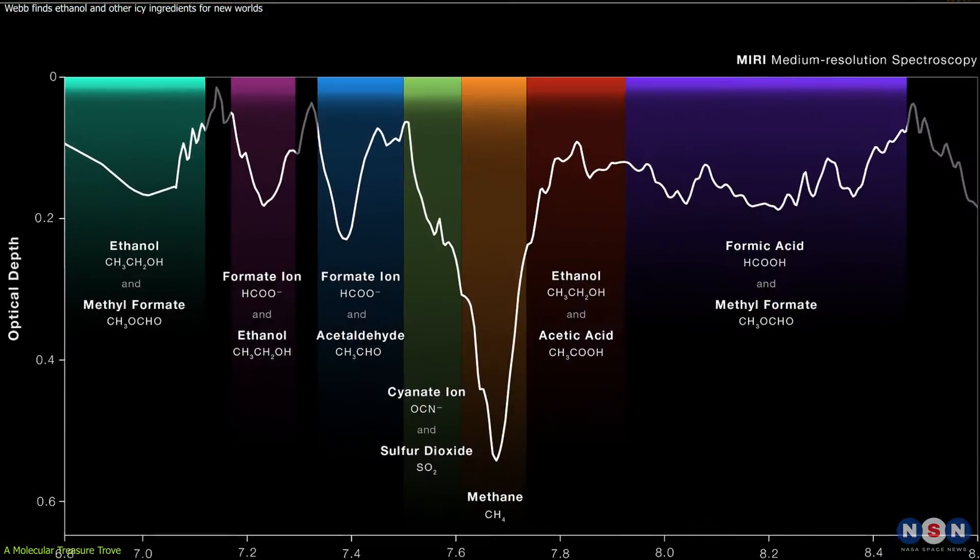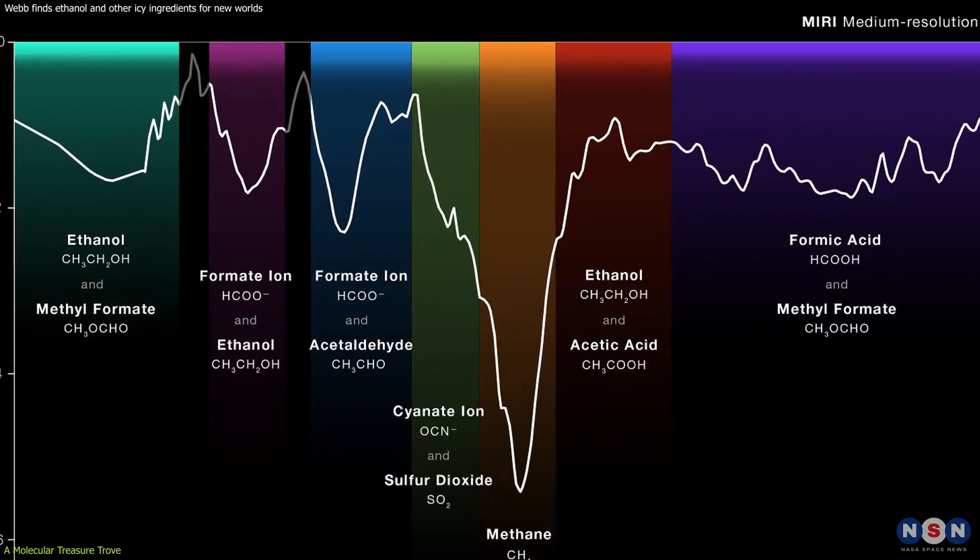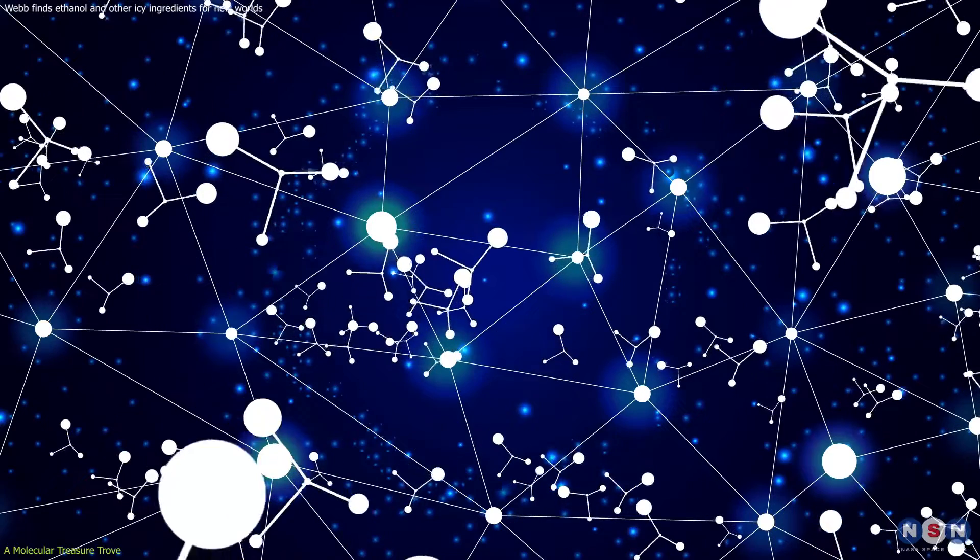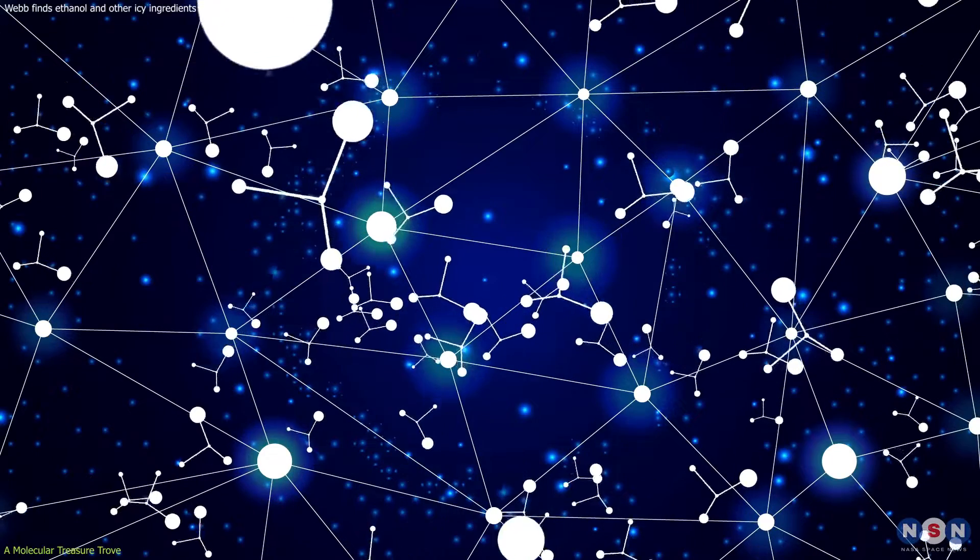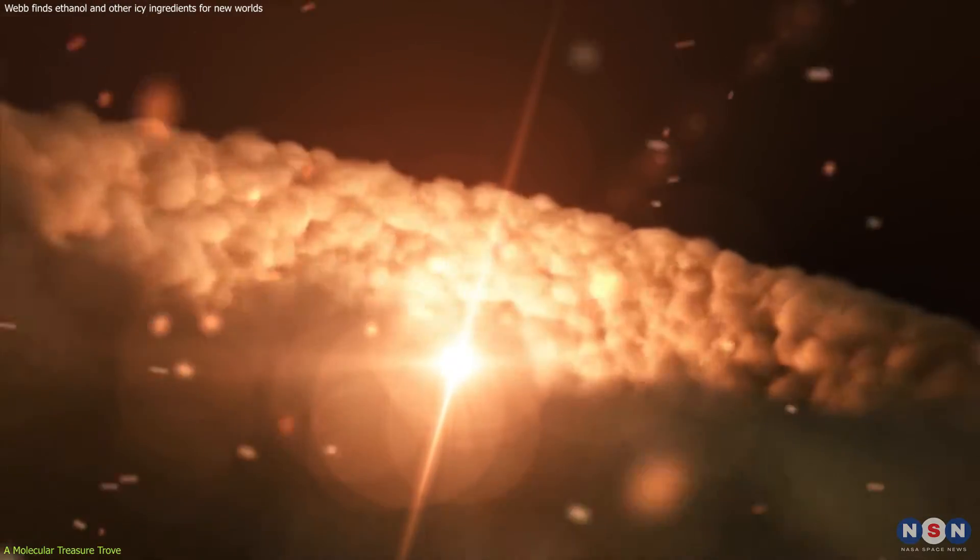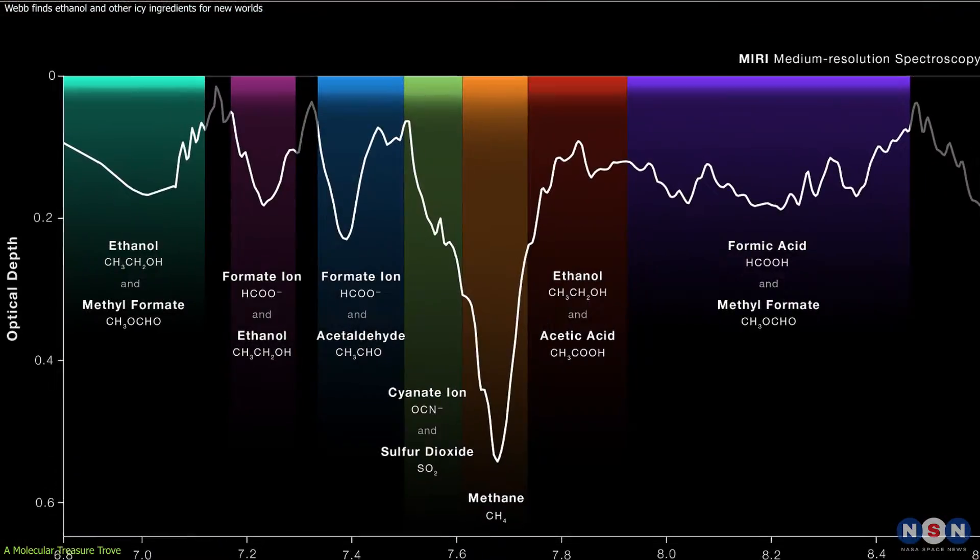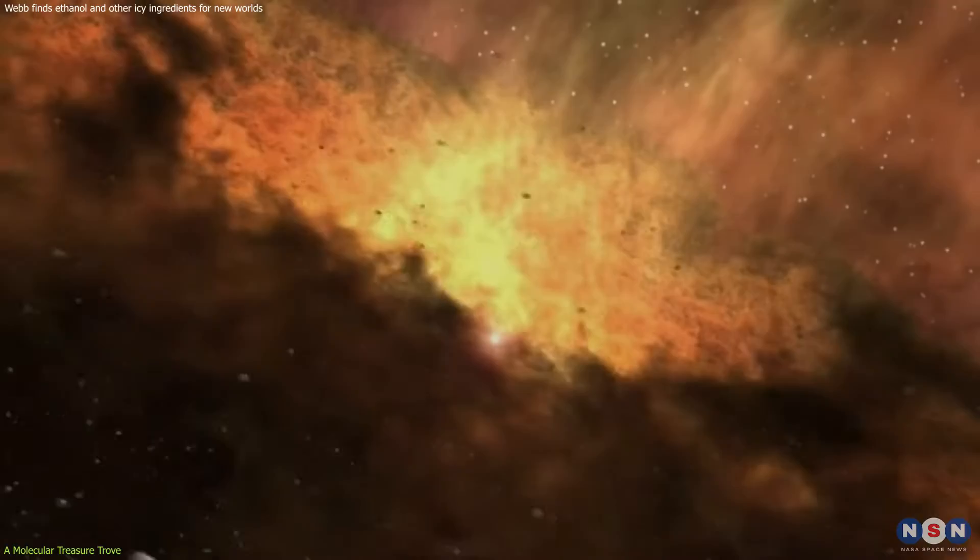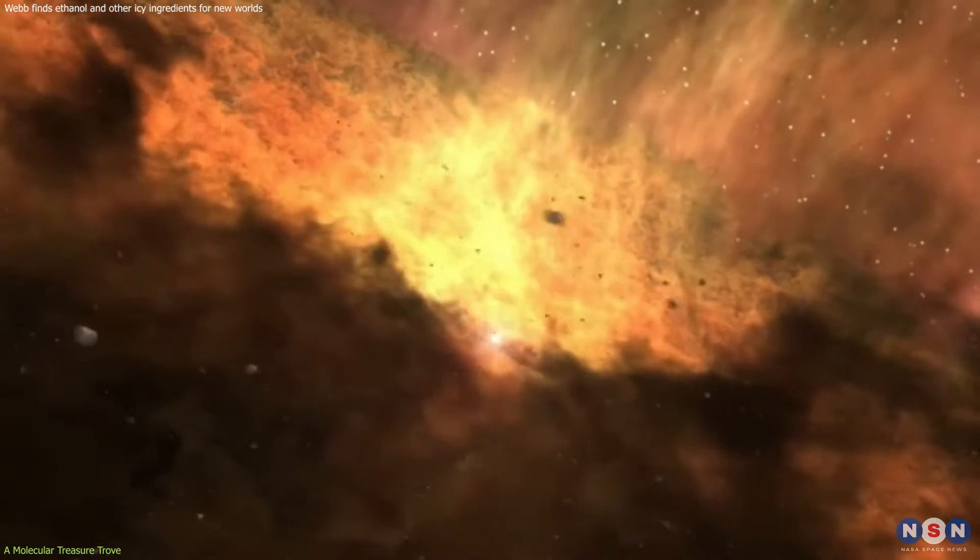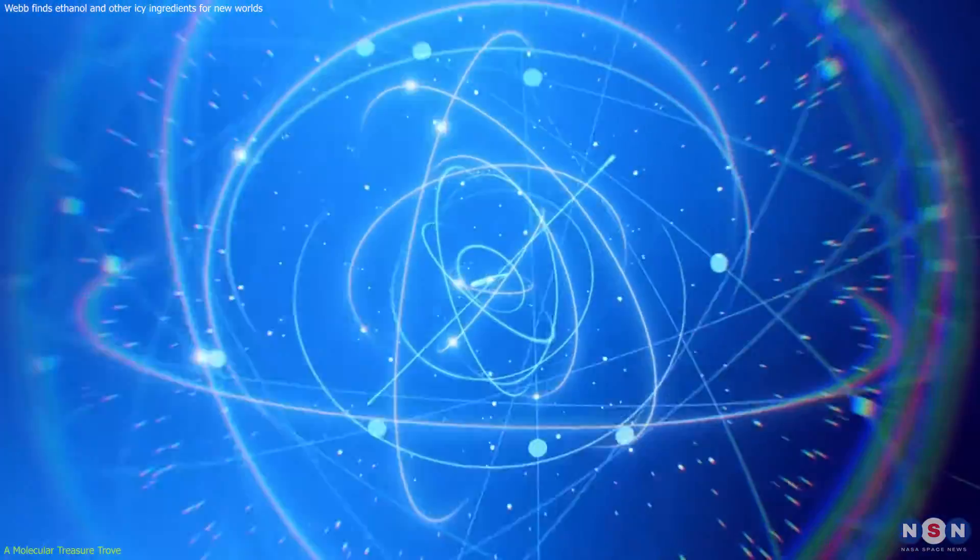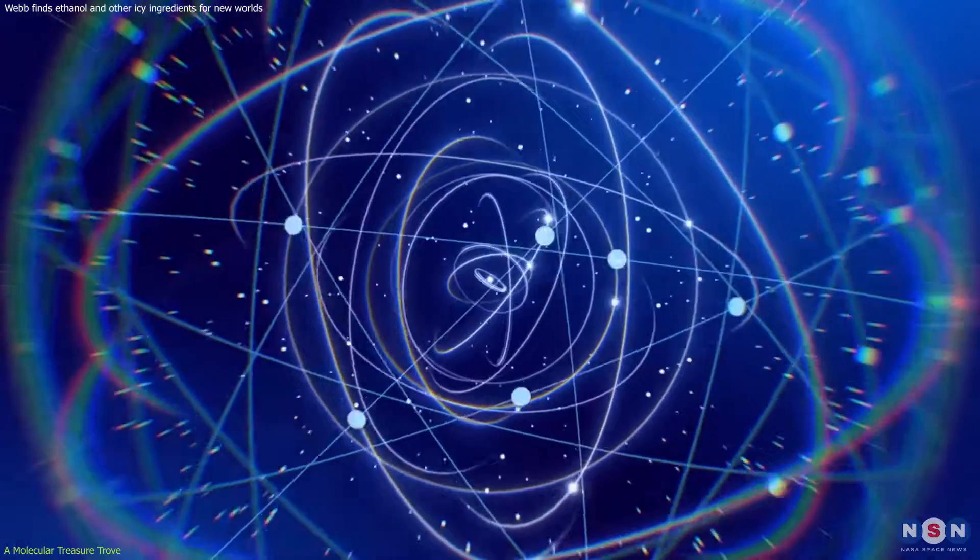This discovery also challenges our understanding of the chemical processes that occur in space. Previously, it was believed that the formation of complex organic molecules required the presence of warm, dense gas clouds. However, the detection of these molecules in the cold, icy regions of protostars indicates that there are alternative pathways for their formation. This opens up new avenues for research and deepens our understanding of astrochemistry.